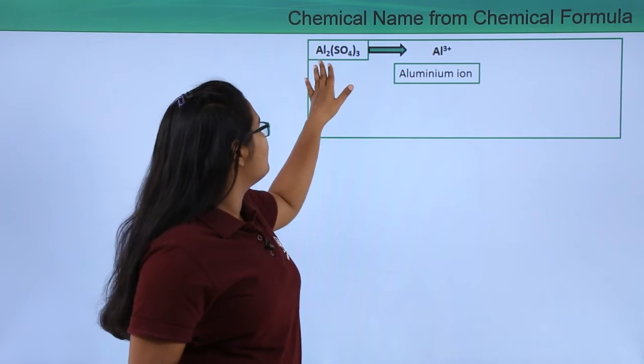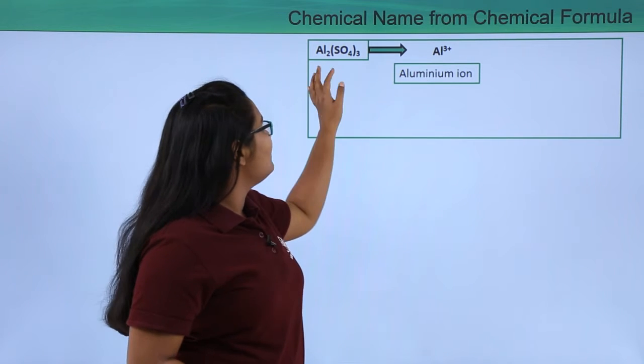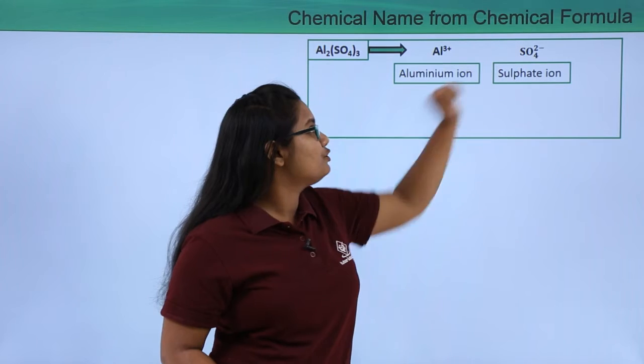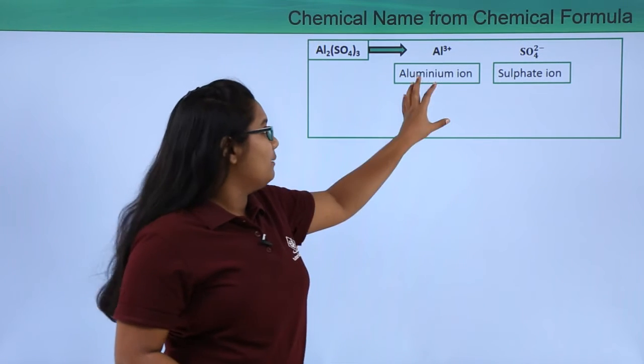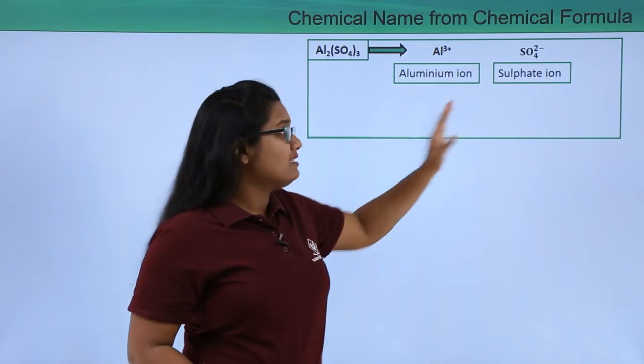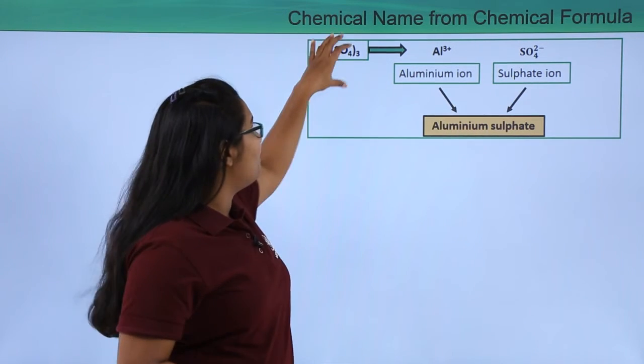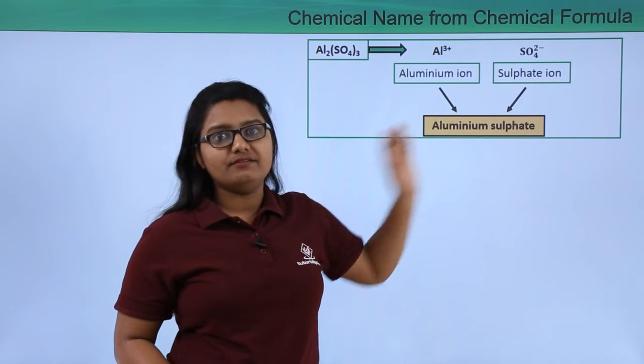Now such a big compound, right? This compound has aluminum which is given as Al and it also has sulfate ions that is SO4 2-. Now on combining these two names the answer that we get is aluminum sulfate. So the name of this compound is aluminum sulfate.